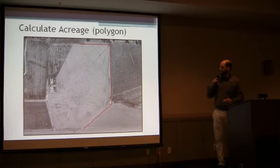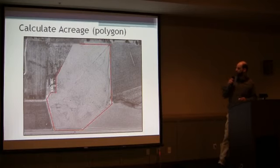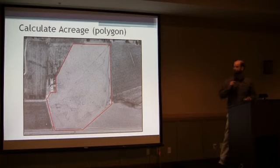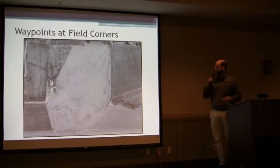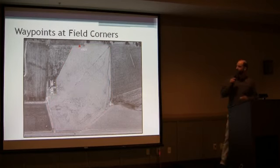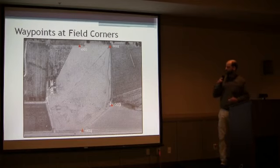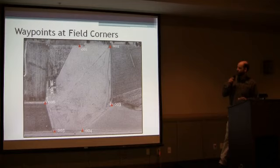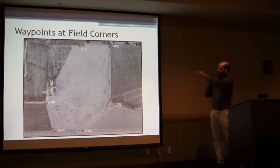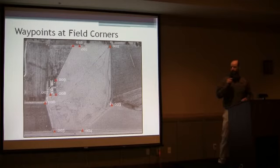Here's an example of one of the things we work on — a simple example of calculating acreage. That would be, for example, walking a field boundary. And this is the second example: if you couldn't walk between points two and three, you could still drop points at each of the field corners and determine acres that way.